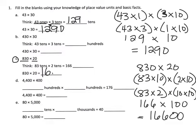Now we do want to fill in this blank, so when you have 83 tens times 2 tens, that's equal to 166 hundreds, so we could write in the word hundreds right here.